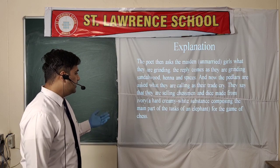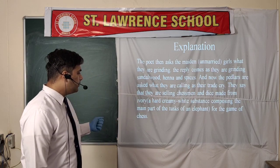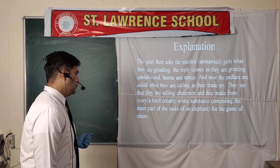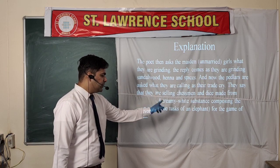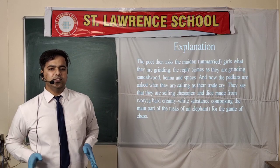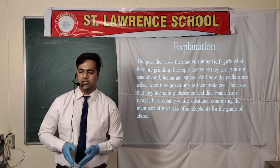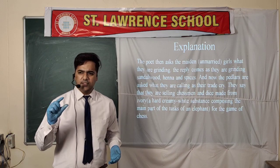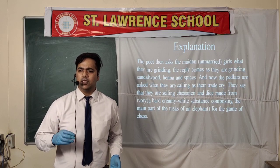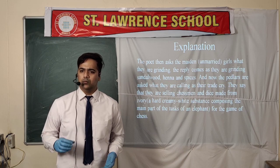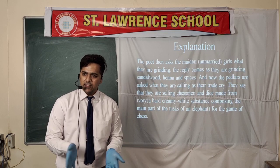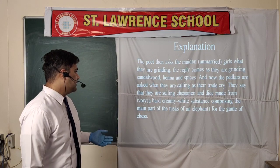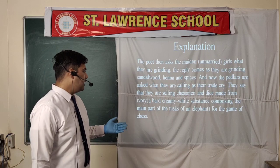Ivory is a hard creamy-white substance composing the main part of the tusk of an elephant. Do not be confused by the word chessmen — chessmen are not the persons who play chess, but rather the pieces of chess such as the horse, elephant and knight. So the peddlers are selling chessmen made from ivory.